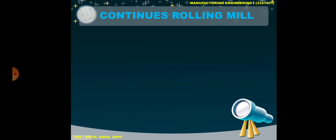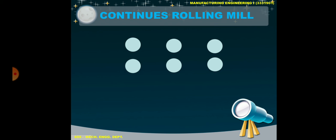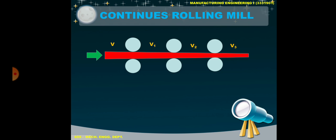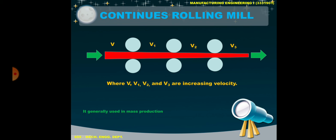Continuous rolling mill: as the name indicates, there are continuous rolling mills in this process and the workpiece continuously decreases its thickness. The velocity changes with the average reduction in thickness — where V1, V2, and V3 are the increasing velocities. The inlet velocity and outlet velocity of the workpiece are different, and through each step its velocity continuously increases. It is generally used in mass production.